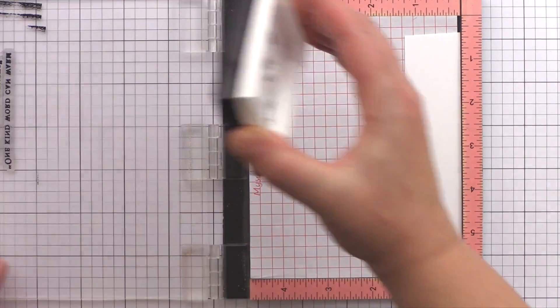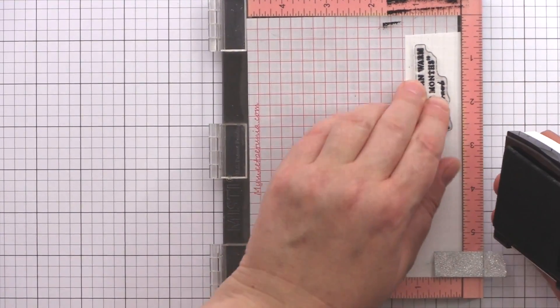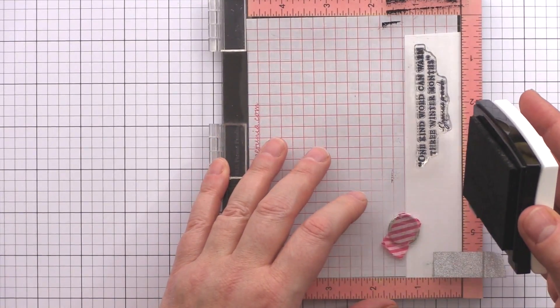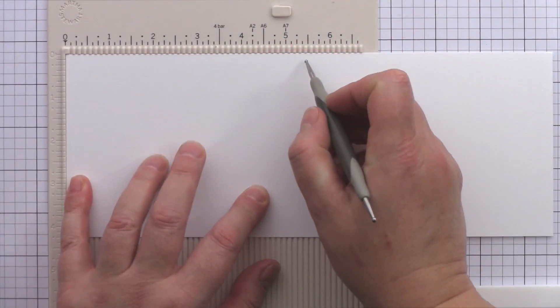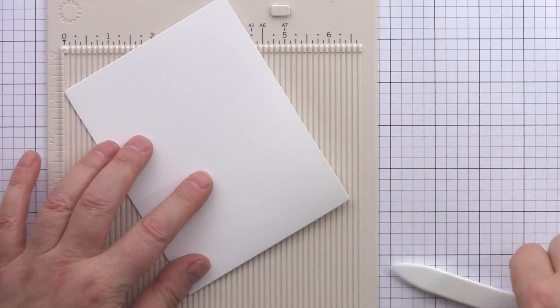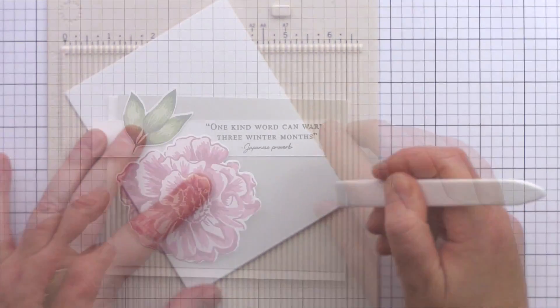I placed the card in the MISTI and stamped the sentiment in Versafine Onyx Black ink which is my favorite ink to make sure you get nice crisp and easily legible sentiments. I've then prepared the card base by cutting a piece of white card lengthways at 4.25 inches and then scoring at 5.5 inches to create an A2 side folding card.